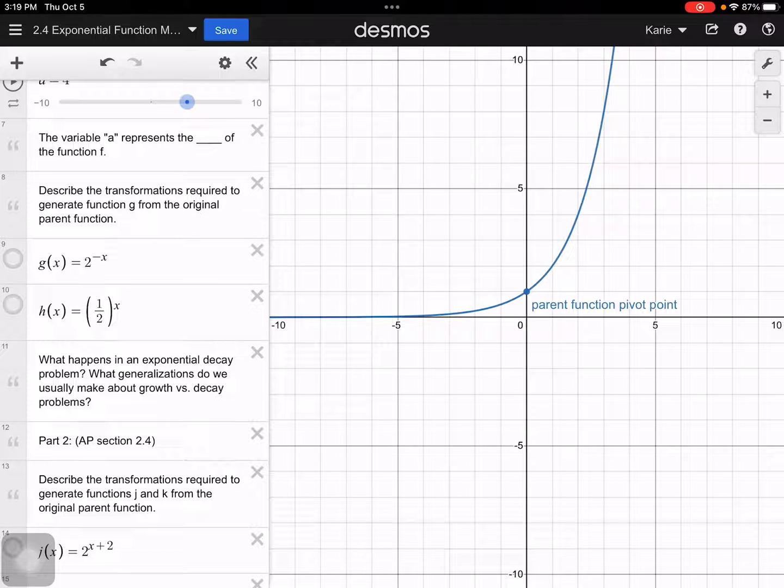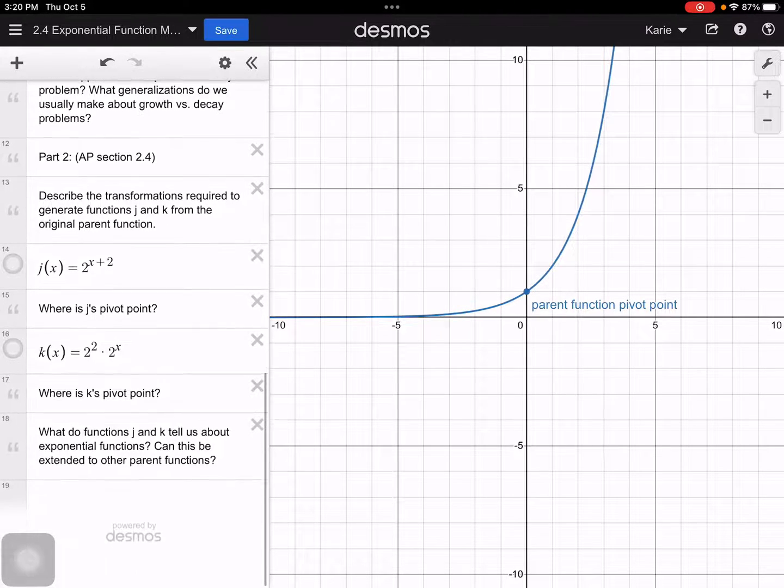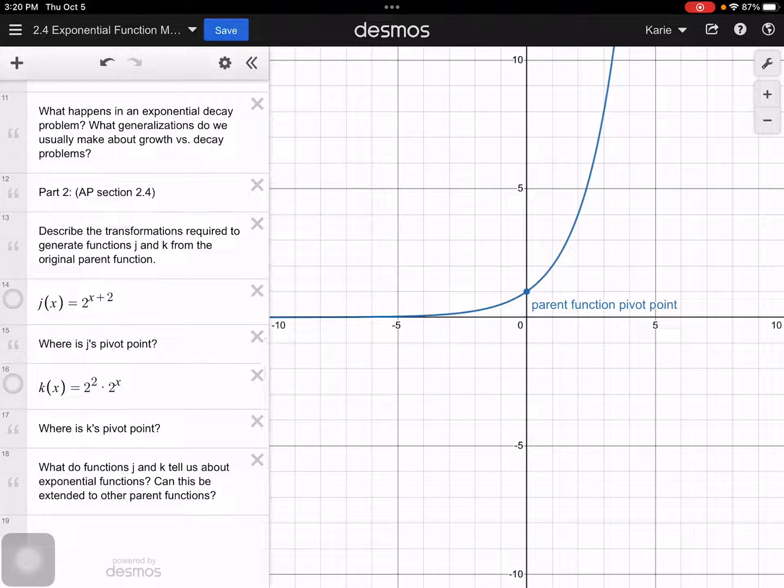Okay, let's keep going. So what happens, what did the question say? What happens in an exponential decay problem, that b value is between 0 and 1? What generalizations do we usually make? Okay, I already answered that.